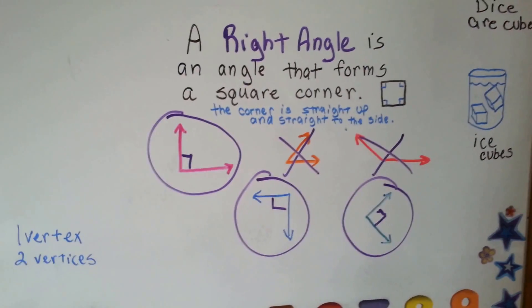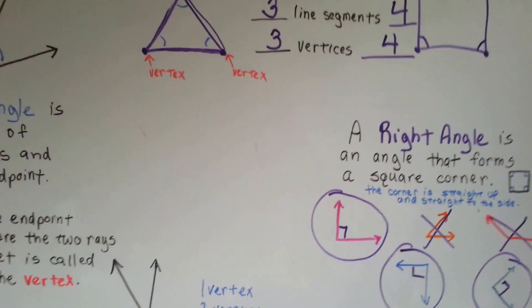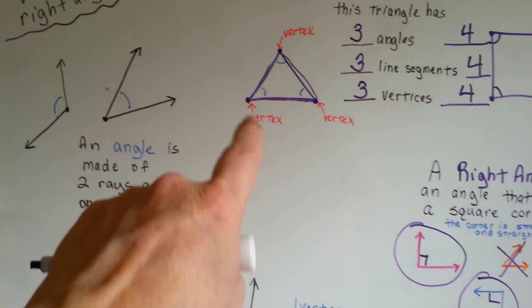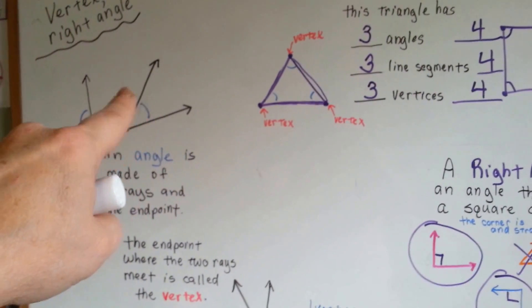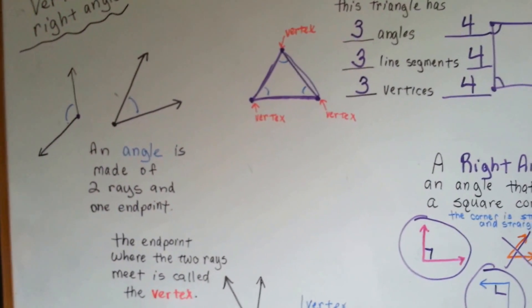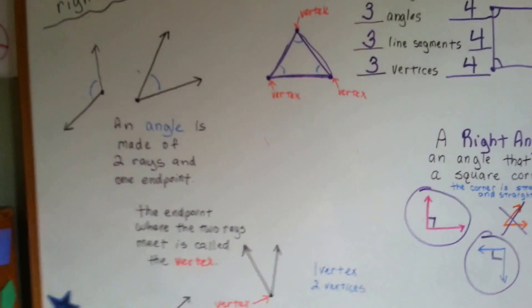So a right angle forms at a square's corner. There are vertexes at the endpoints where the line segments meet and the angle is the inside of two rays or two line segments. It wasn't that hard, was it?